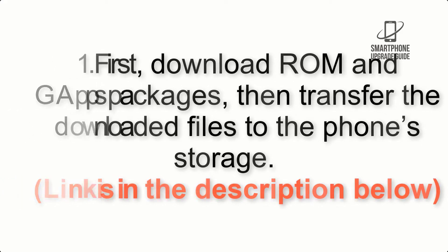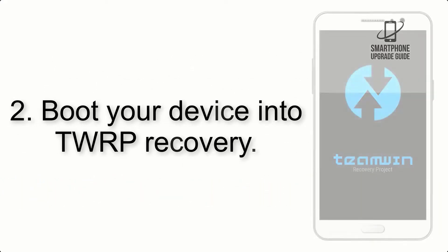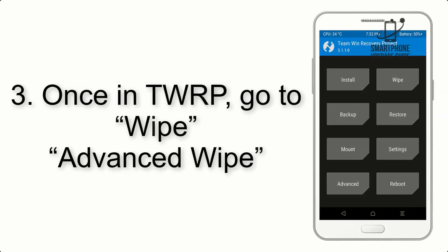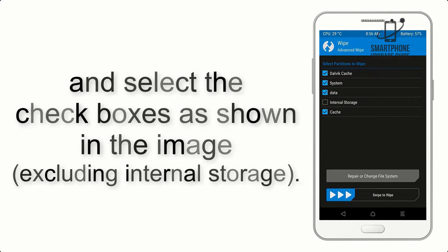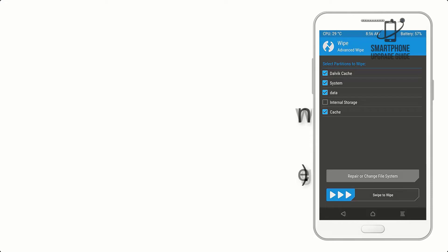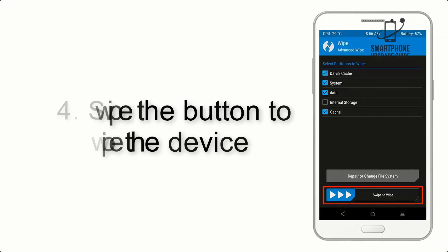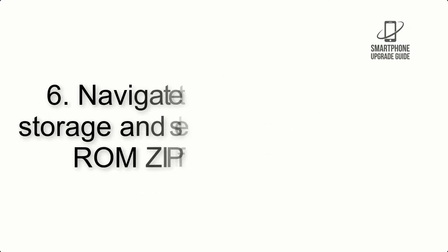The link is in the description below. Step 3: Boot your device into TWRP recovery. Once in TWRP, click on Advanced Wipe and select the checkboxes as shown in the image, excluding internal storage. Step 4: Swipe the button to wipe the device.